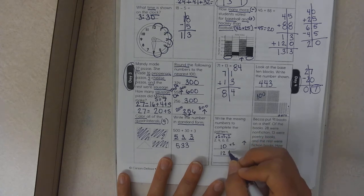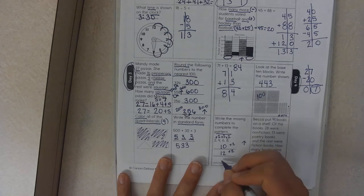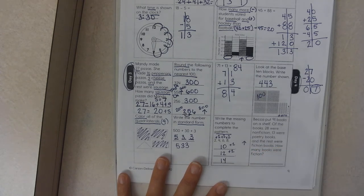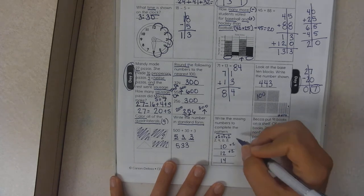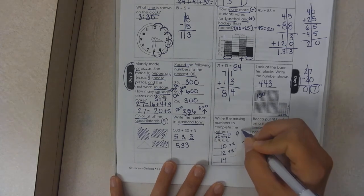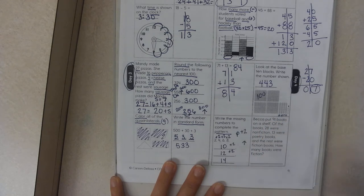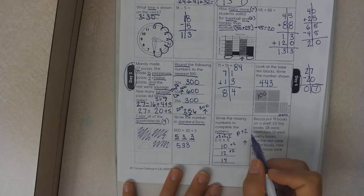So if I was to write what the pattern is, you could choose any number, but we could do P plus two. That is your pattern: plus two.